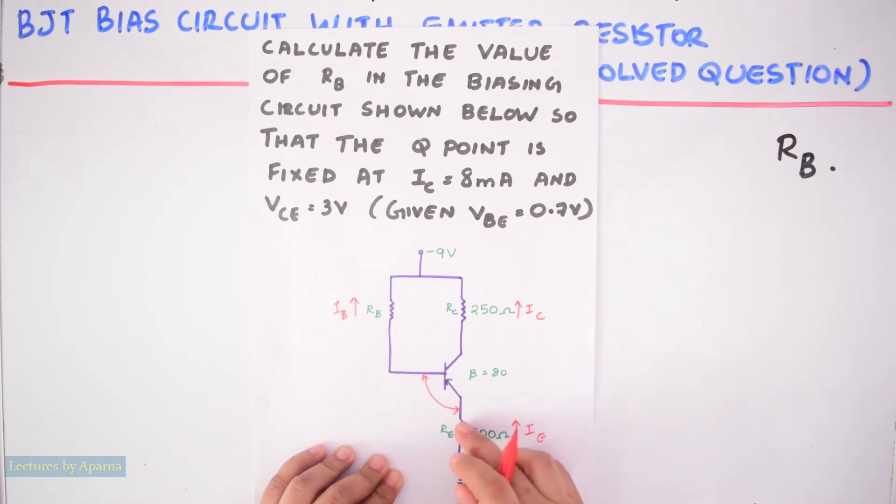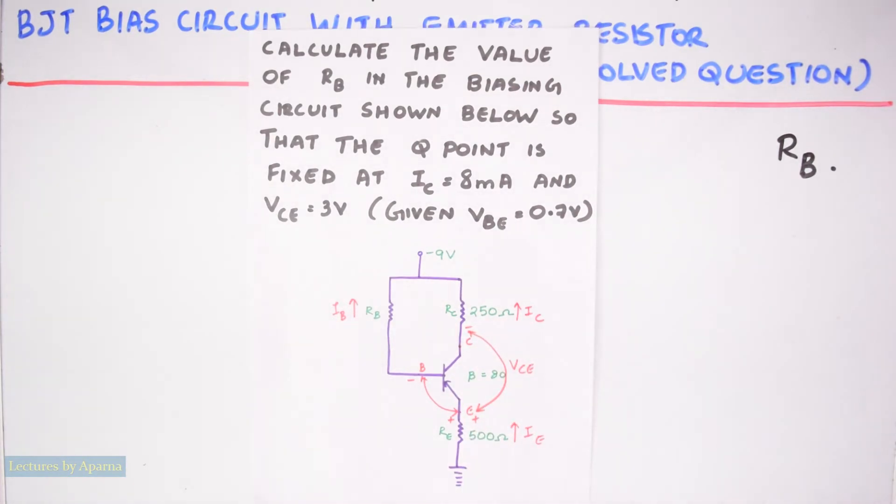This is a voltage across base and the emitter terminals. Its polarity will be like this because this is a PNP transistor. And here this voltage is VCE and its polarity will be like this. All directions will be reversed in PNP transistor compared to NPN transistor.